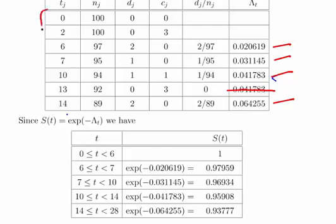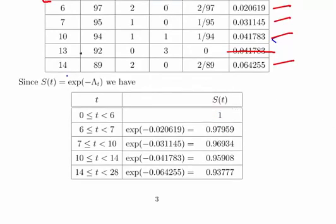These are the survival functions for the various time periods. From day zero to the start of day six, it's one. From six to seven, exp(-0.020619) = 0.97959. Seven to ten, exp(-0.031145) = 0.96934. Ten to fourteen, exp(-0.041783) = 0.95908. And fourteen to twenty-eight, exp(-0.064255) = 0.93777. That is the survival functions for each of those time periods.